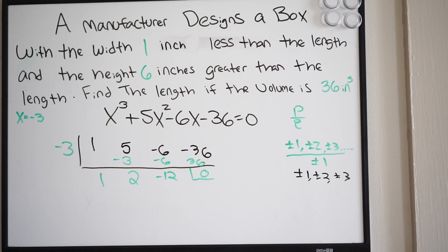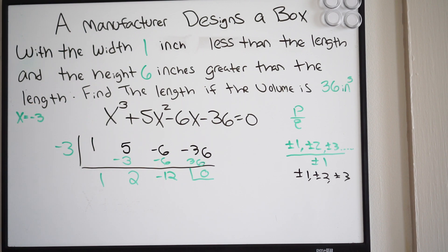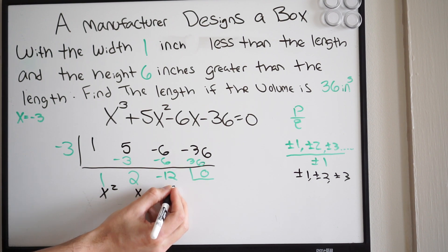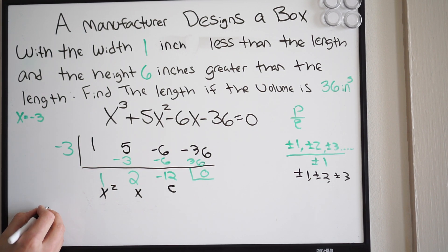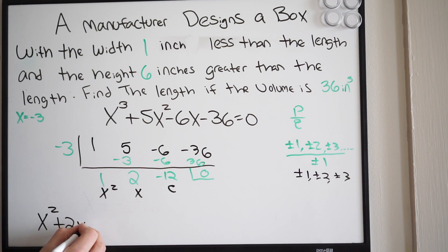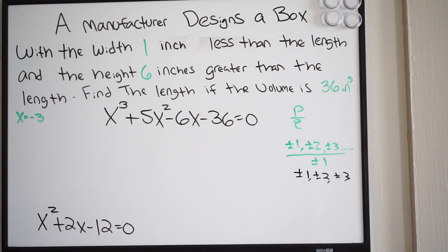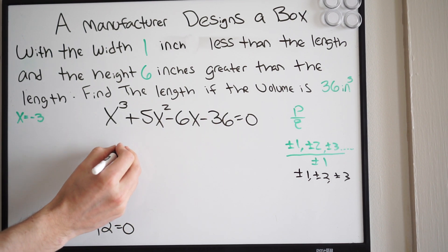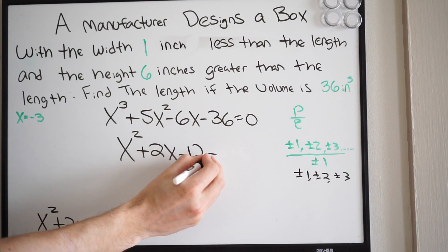Since we just divided, the polynomial went down a degree from cubic to quadratic. The resulting quotient gives us x squared plus 2x minus 12, all equal to zero.